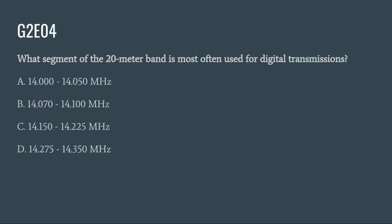G2E04: What segment of the 20 meter band is most often used for digital transmissions? A. 14.0 to 14.050 MHz. B. 14.070 to 14.100 MHz. The correct answer is B: 14.070 MHz to 14.100 MHz.